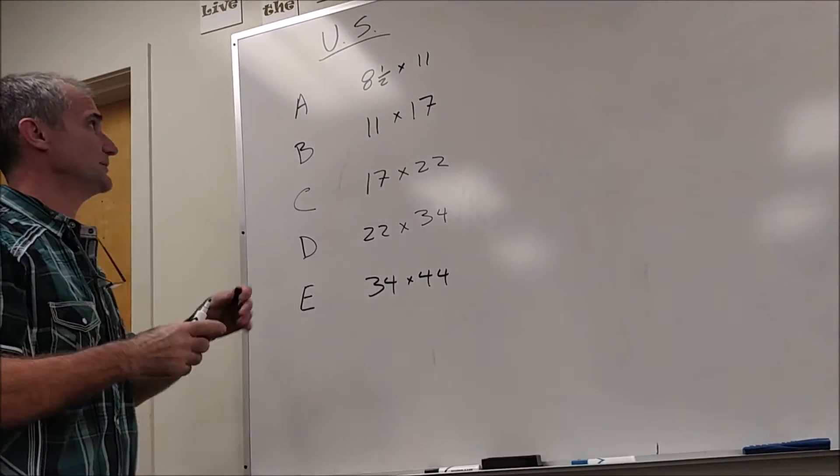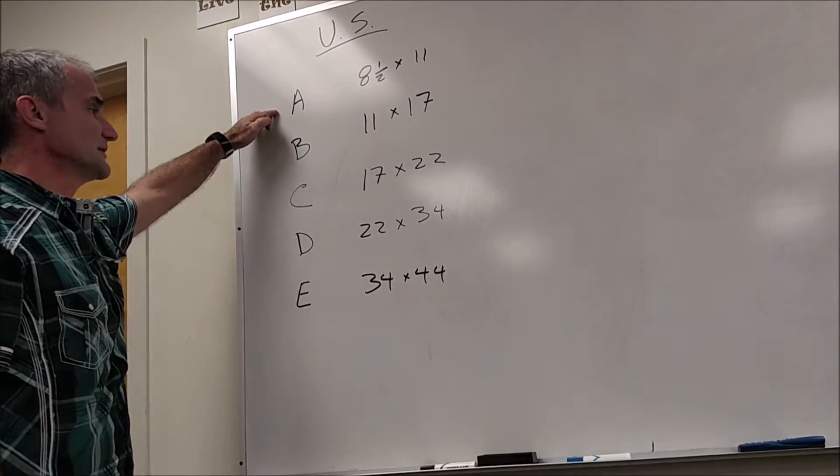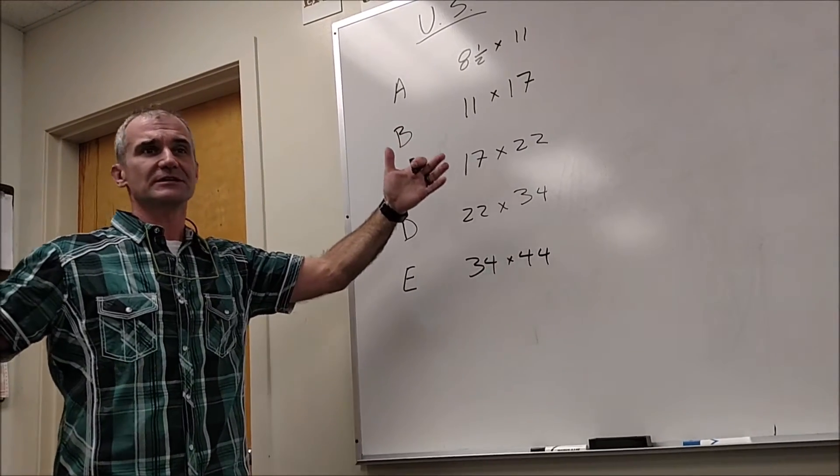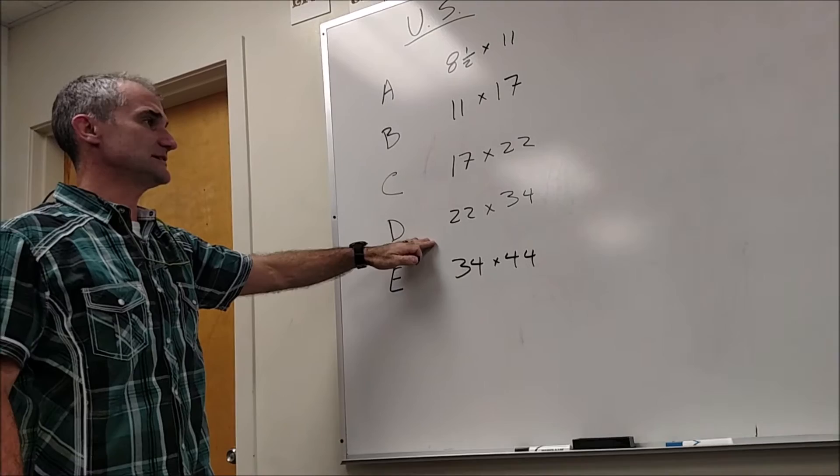So a standard piece of paper out of a printer is A size paper. The standard floor plan of architectural drawing, quarter inch to a foot scale, is usually D size.